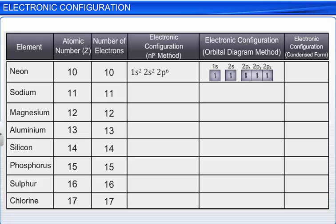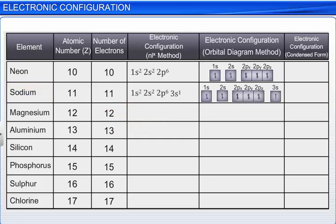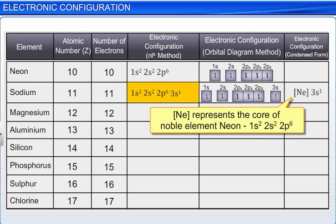The electronic configurations of other elements are written in the same way. After filling the 2p orbitals, electrons fill the 3s and then the 3p orbitals. We can also write the electronic configurations of most elements in a simplified or condensed form. For example, sodium has 11 electrons — one more than its nearest noble gas Neon. The 11th electron will enter the 3s orbital. Therefore, the electronic configuration of sodium, which is 1s2 2s2 2p6 3s1, can also be written in condensed form as [Ne] 3s1.